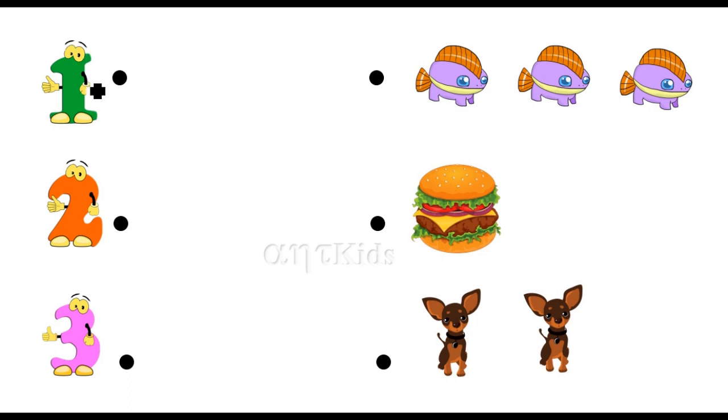1, this is number 1. 1 burger is there, rematch with 1 burger. Here, 1-2-3, 3 monsters, find out where is number 3, here, number 3 is here and then this is 2, 1-2, 2 dogs are here, rematch it.